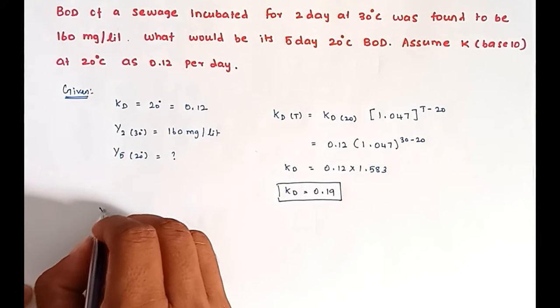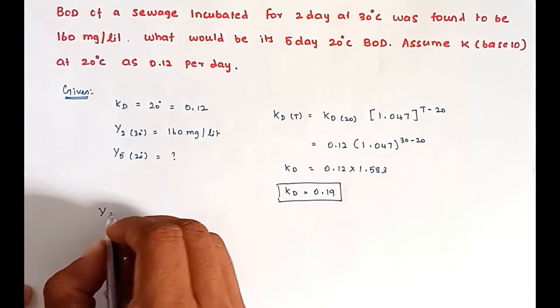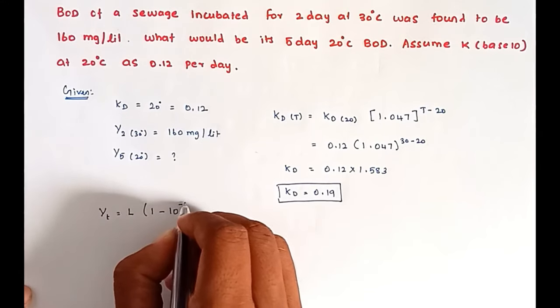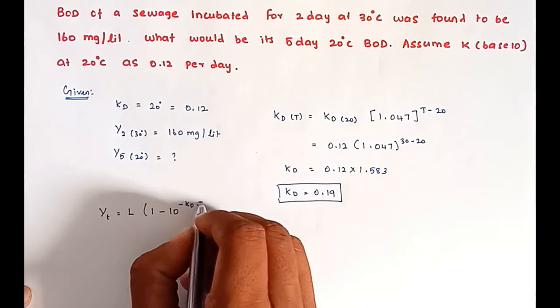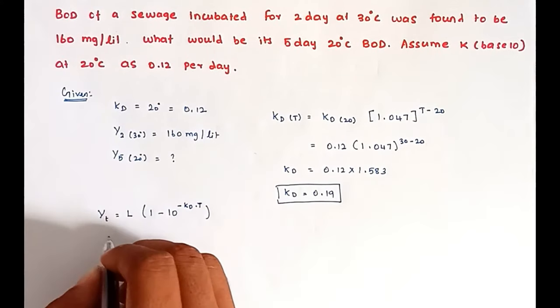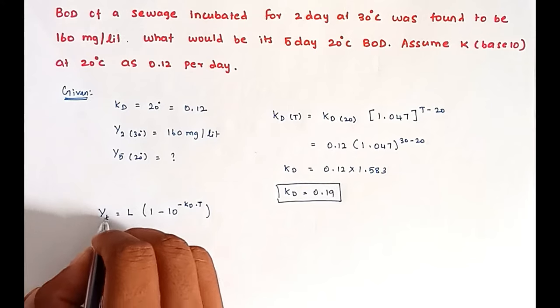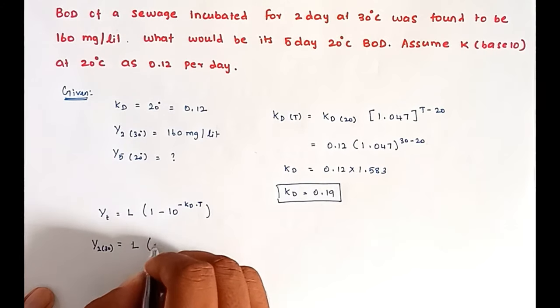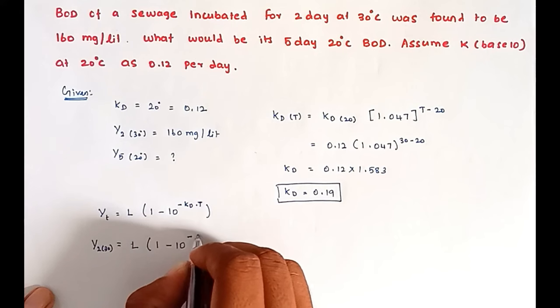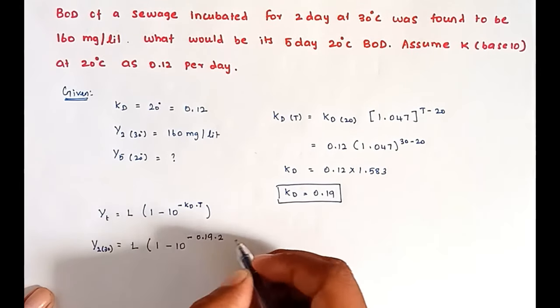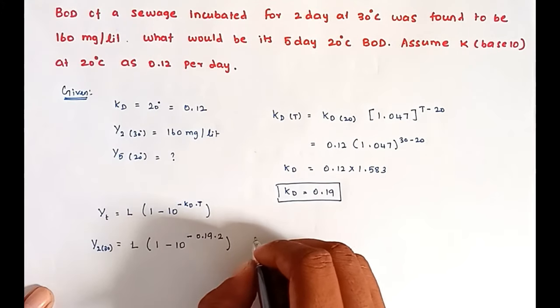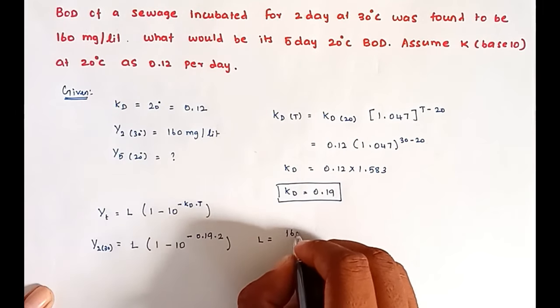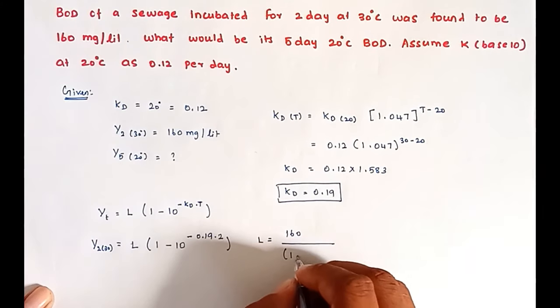Next we're going to find out the BOD of 5 days 20 degree Celsius. The formula is Yt equal to L times 1 minus 10 power minus KD times T. Now we can substitute: Y2 at 30 degrees equals L times 1 minus 10 power minus 0.19 times 2. So L equal to 160 divided by 1 minus 10 power minus 0.19 times 2.